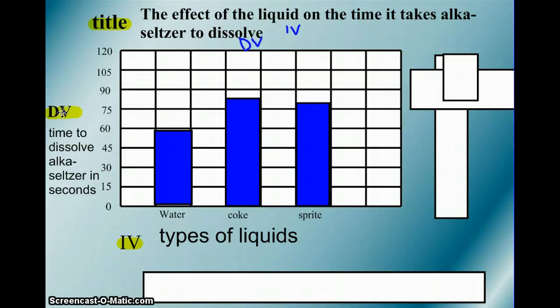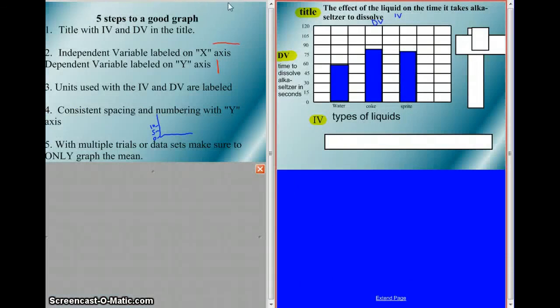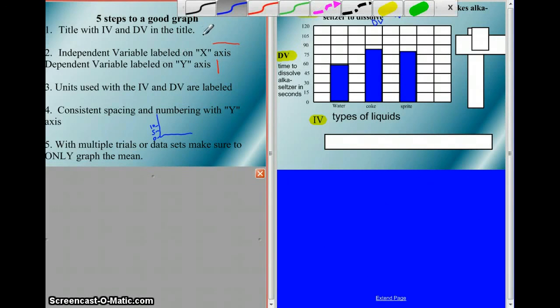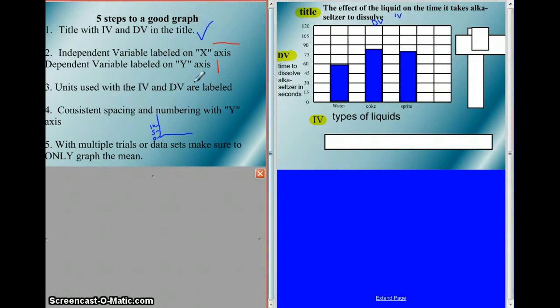Make sure you have dependent variables and independent variables labeled. And make sure you have your units labeled and consistent spacing with a title that has your independent and dependent variables in it. So let's check and make sure that we have everything. Do you have a title with independent and dependent variable in title? Yes, you do. They're both there. Independent variable labeled on x-axis. Yes. Down here. Dependent variable labeled on y-axis. Yep. Got it right here. Check.